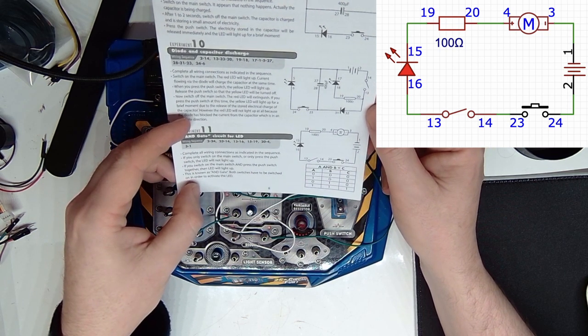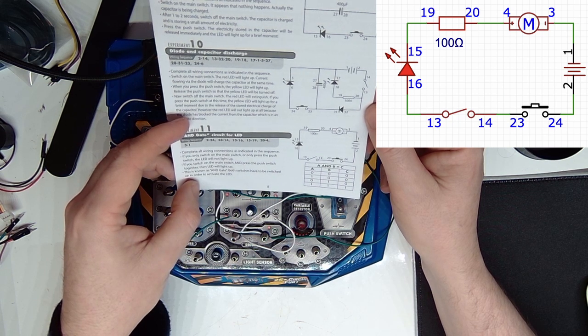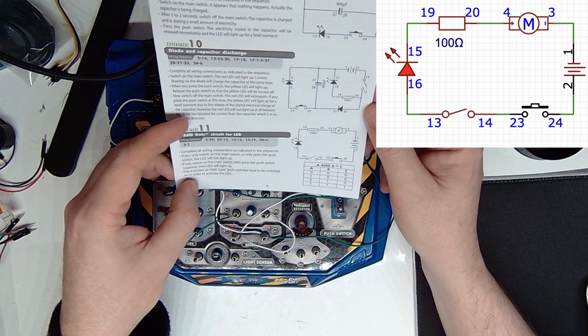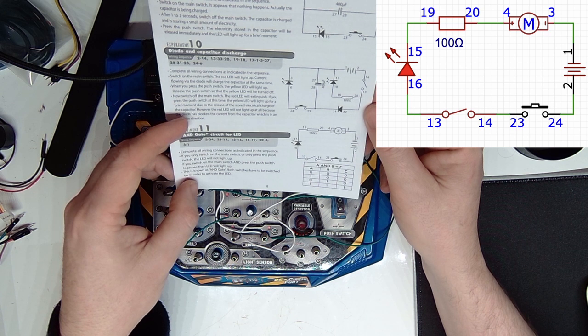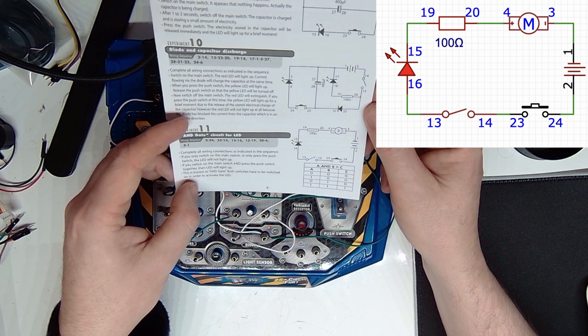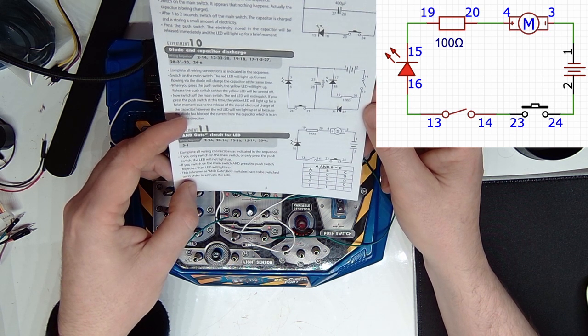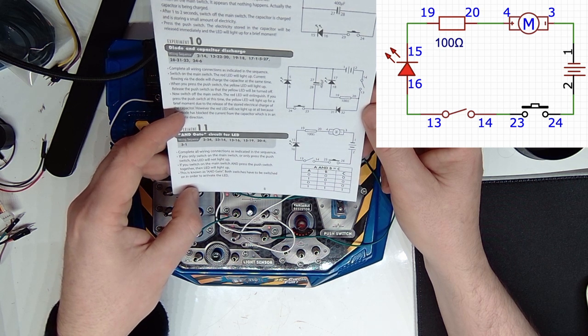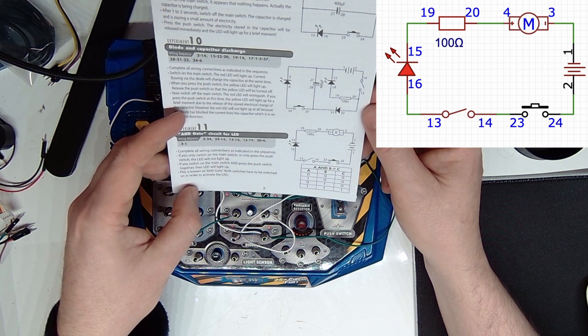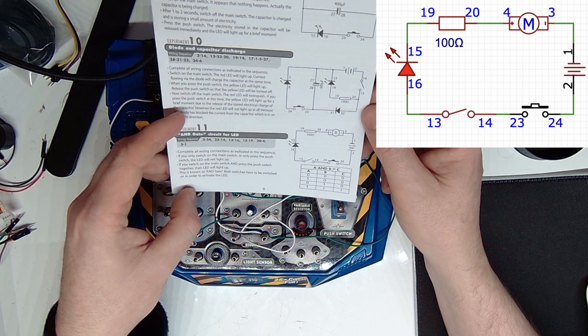Complete all wiring connections as indicated in the sequence. If you only switch on the main switch or only press the push switch, the LED will not light up. If you switch on the main switch and press the push switch together, then the LED will light up. This is known as an AND gate. Both switches have to be switched in order to activate the LED.